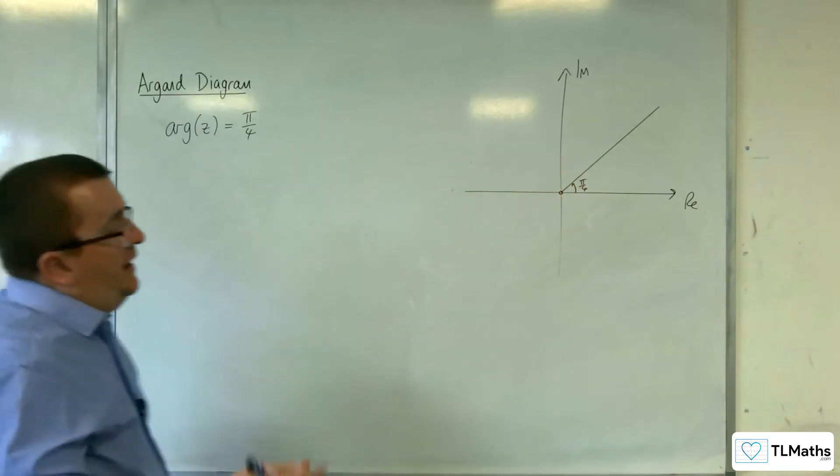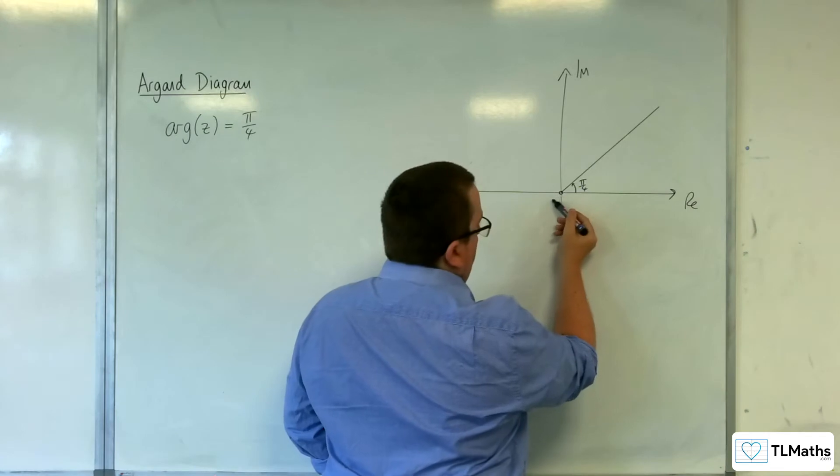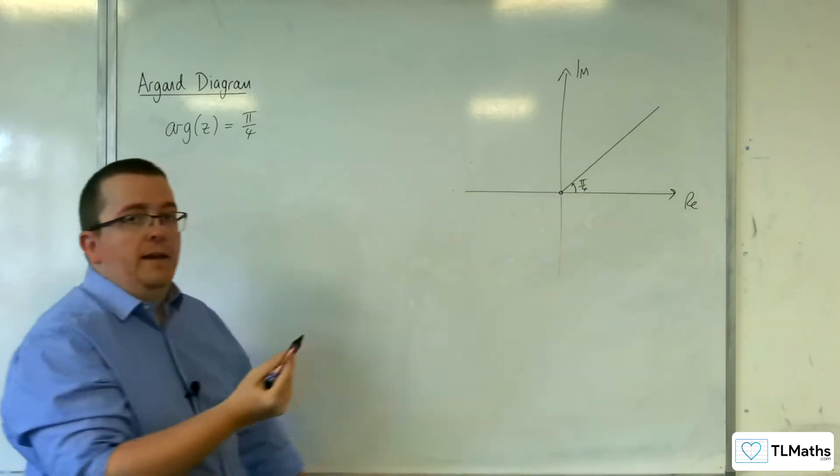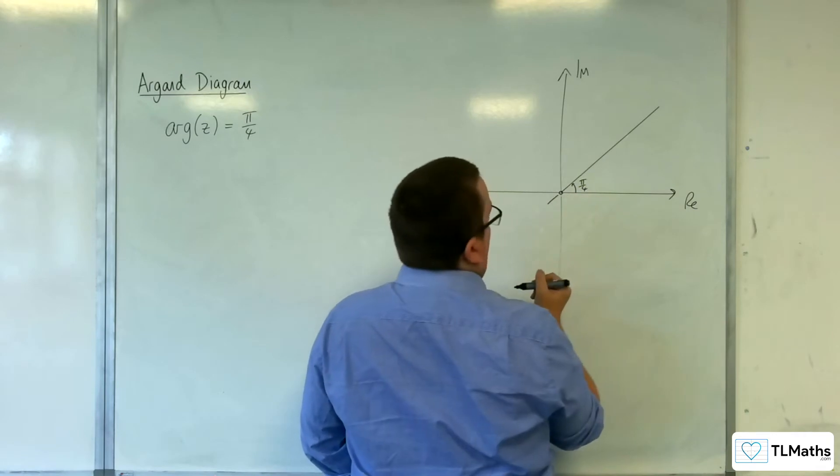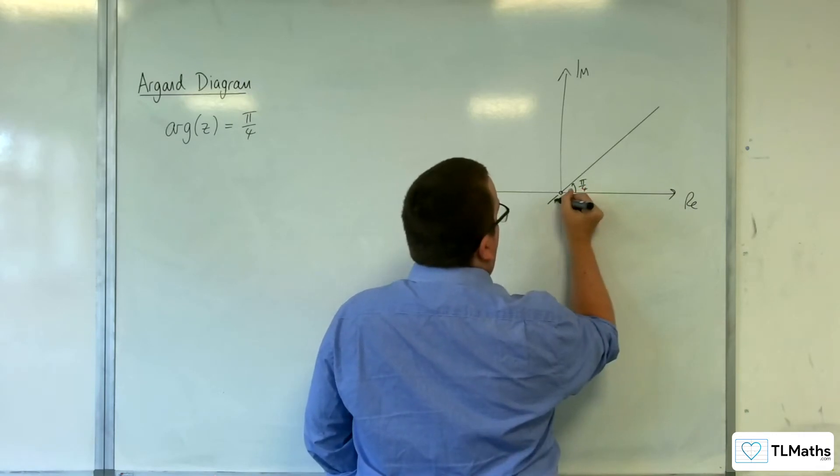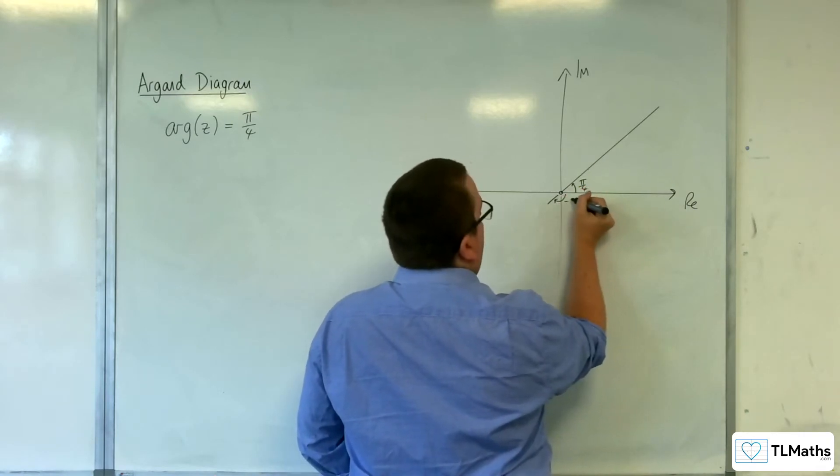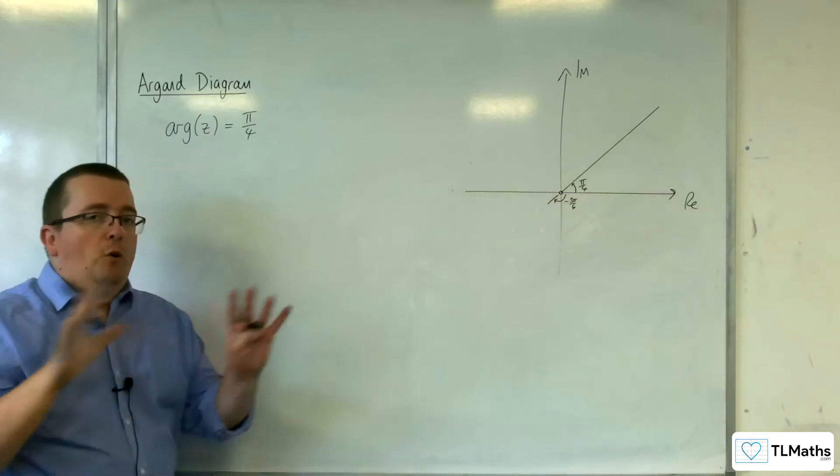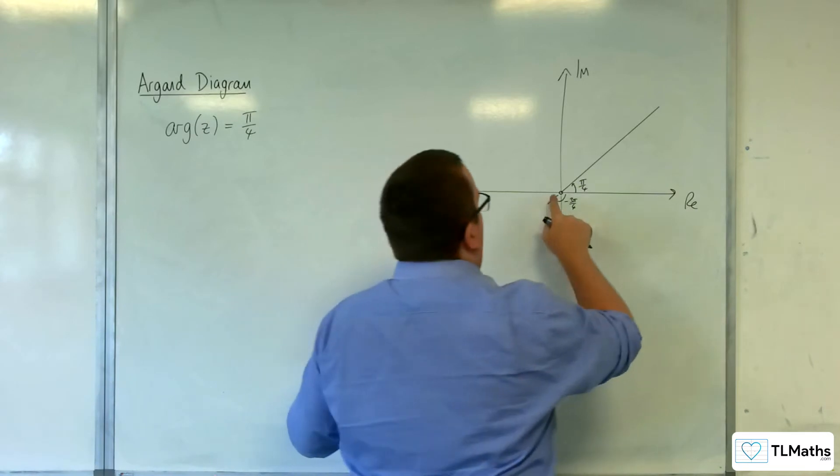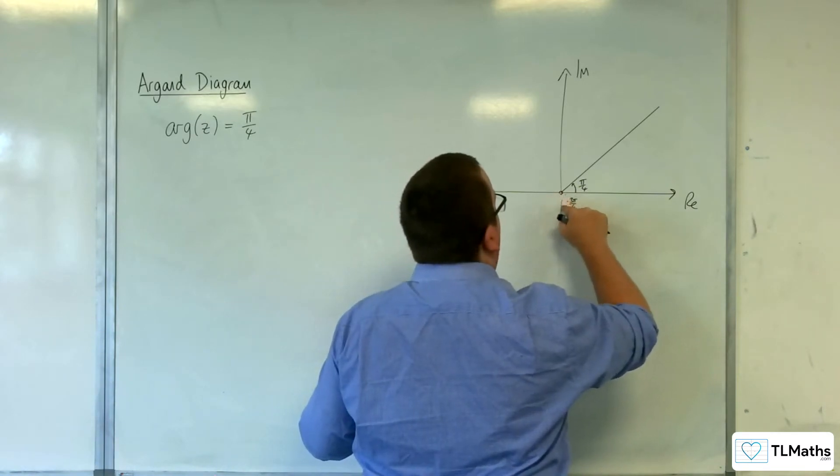And it's not including the line going on down here, because that part of the line doesn't make an argument of pi over 4, because that is the angle minus 3 pi over 4. So I'm not including that, so we can not worry about that bit.